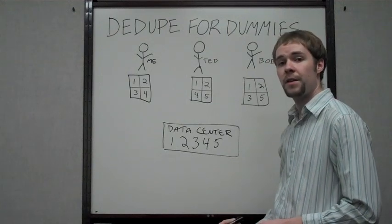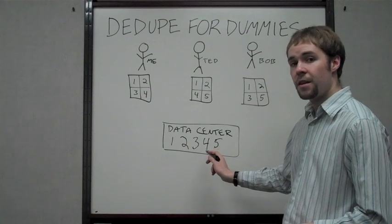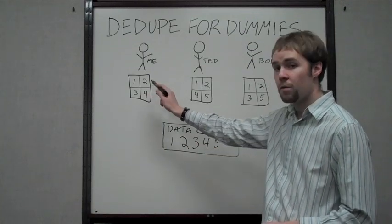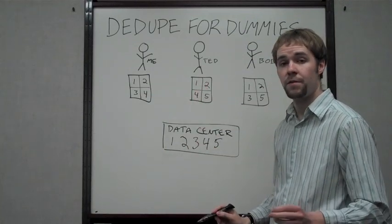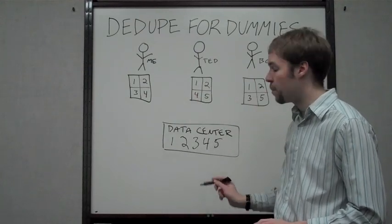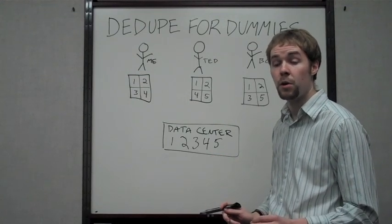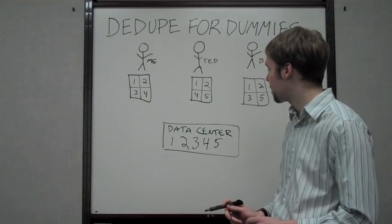The great thing about block level deduplication is you've only got the amount of space of 1 and a quarter. Instead of, as you saw in file level deduplication, each of these would be completely different. It would take up that much more space in the data center and would slow down your bandwidth when you're trying to upload or restore from the data center.